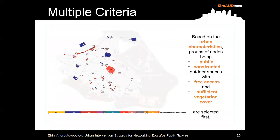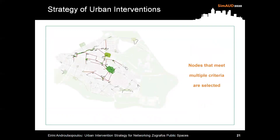Hierarchical clustering results based on urban characteristics produce some groups of nodes being public, constructed outdoor spaces with free access and sufficient vegetation cover. The aim is to set up a network by intervening only in the links between them, as these are public constructed spaces in good current condition with free access and sufficient vegetation cover. In addition, these are public spaces that are important for their role in the network.